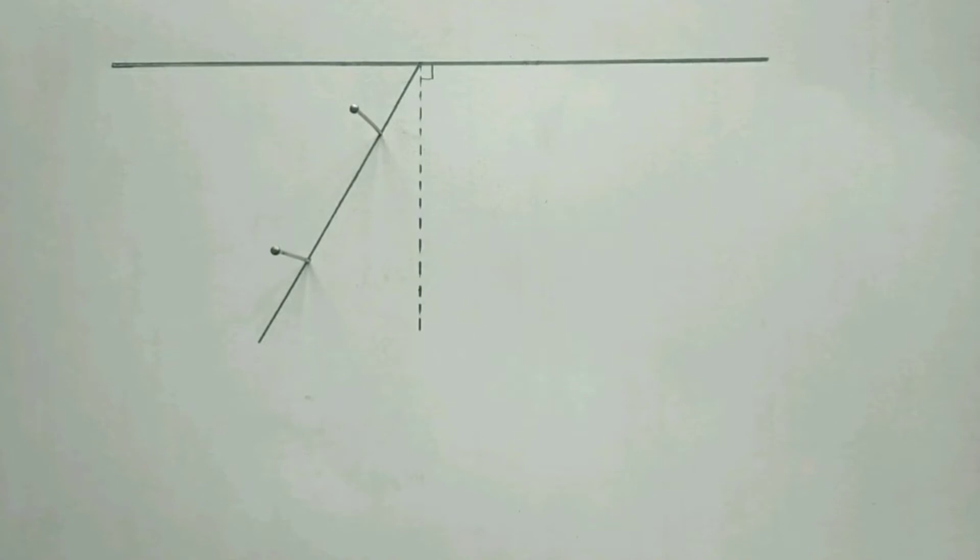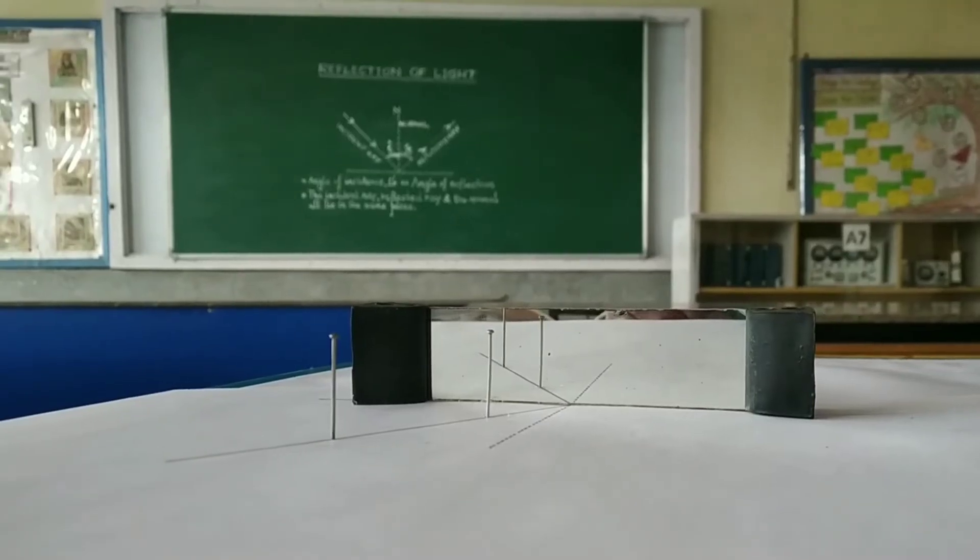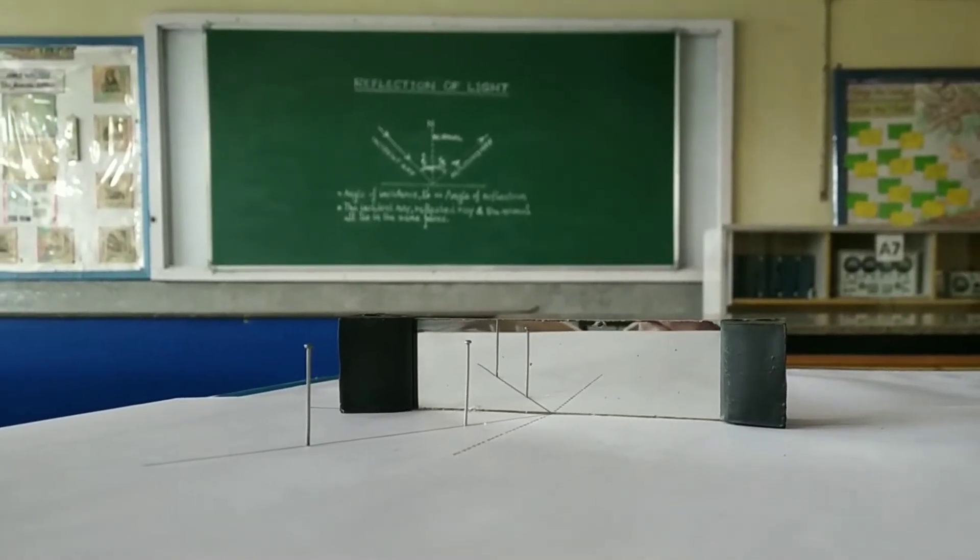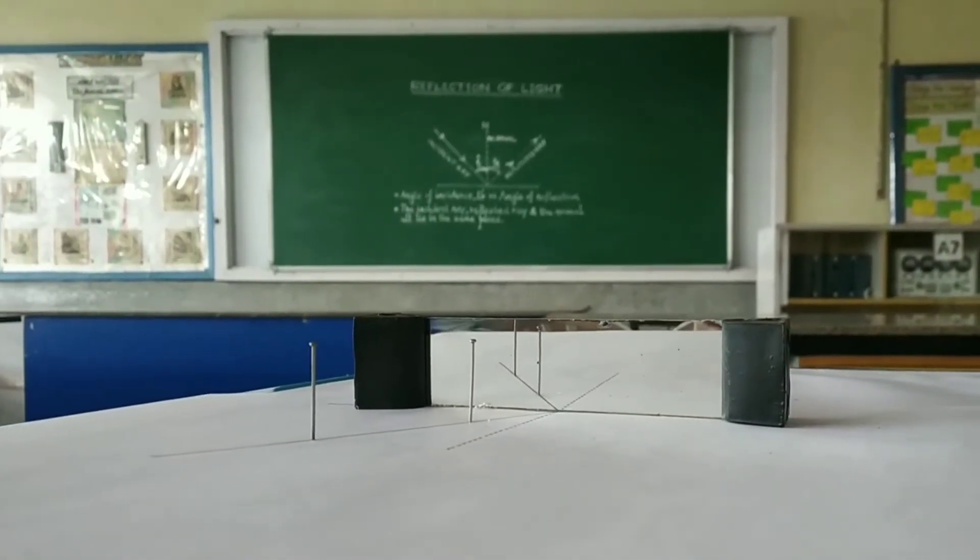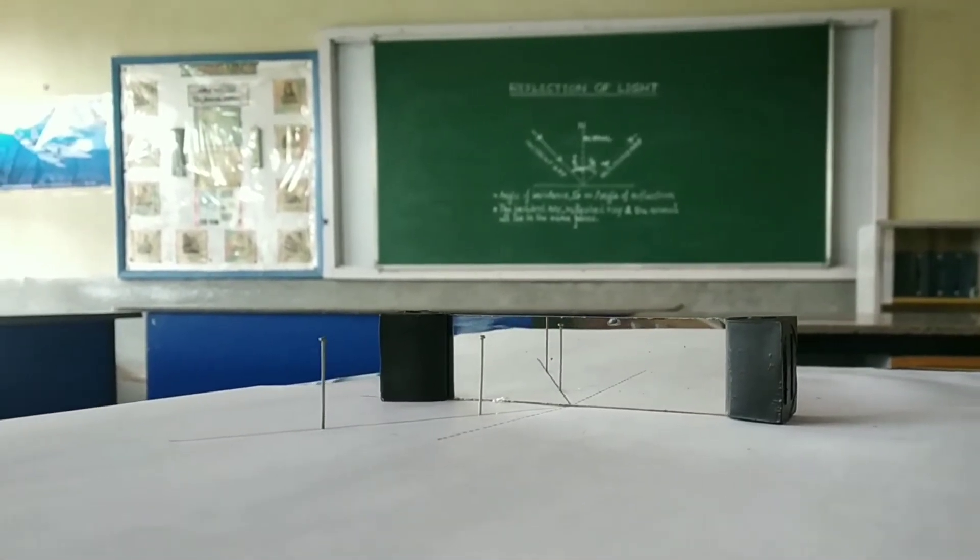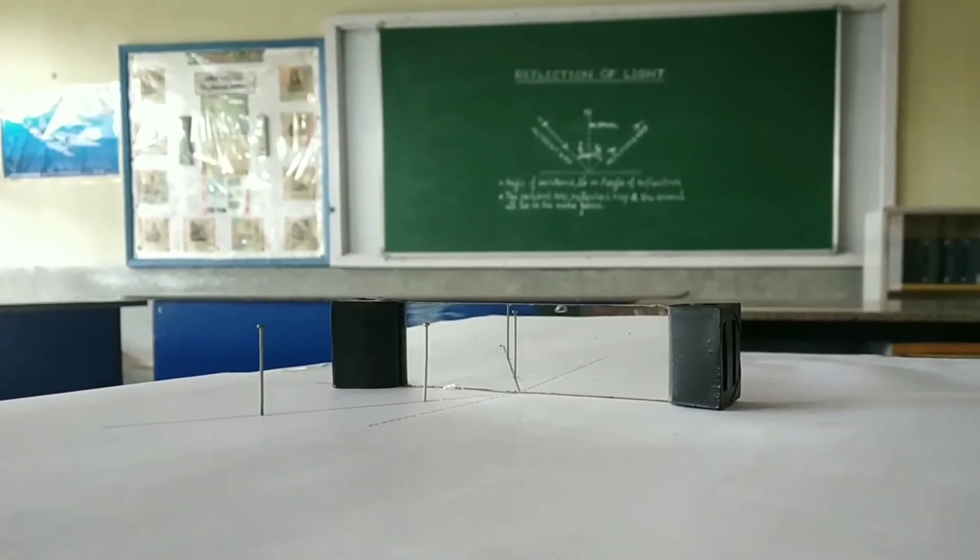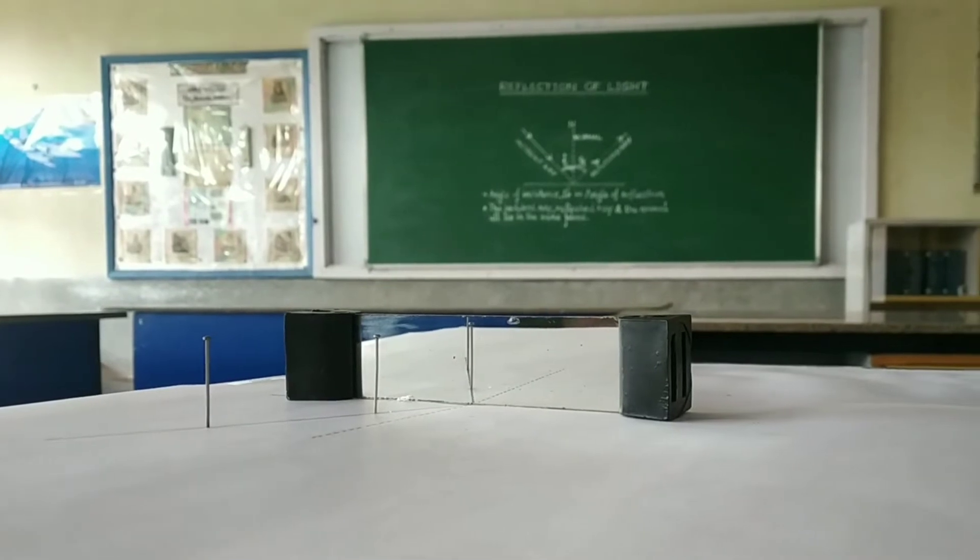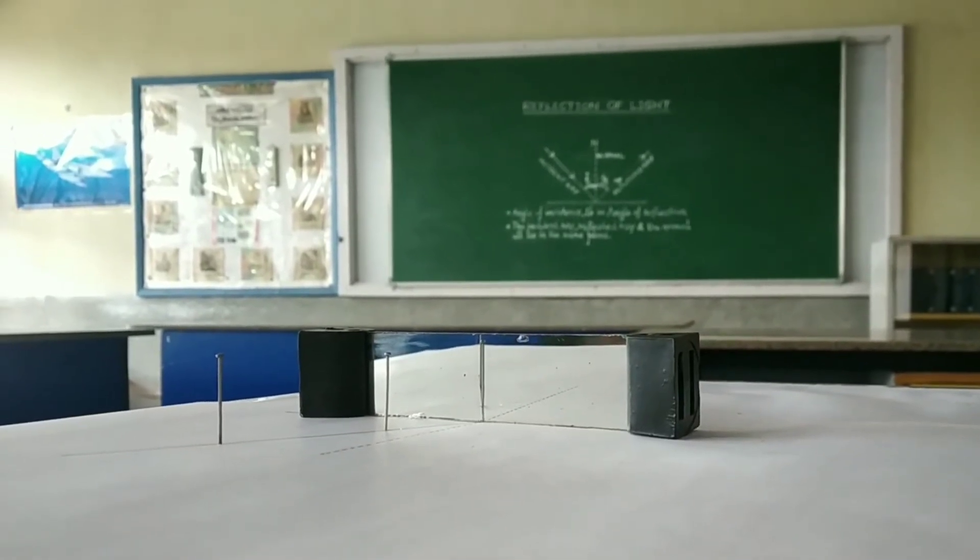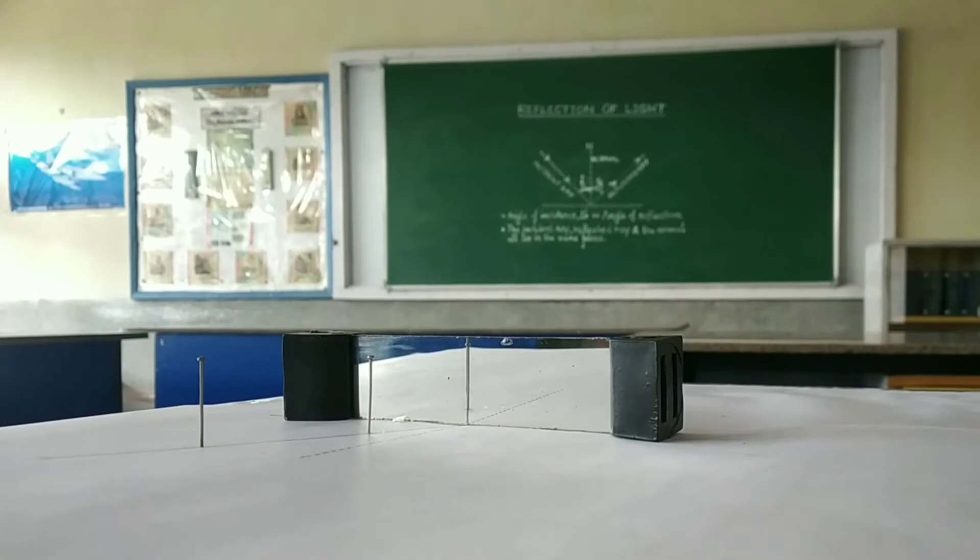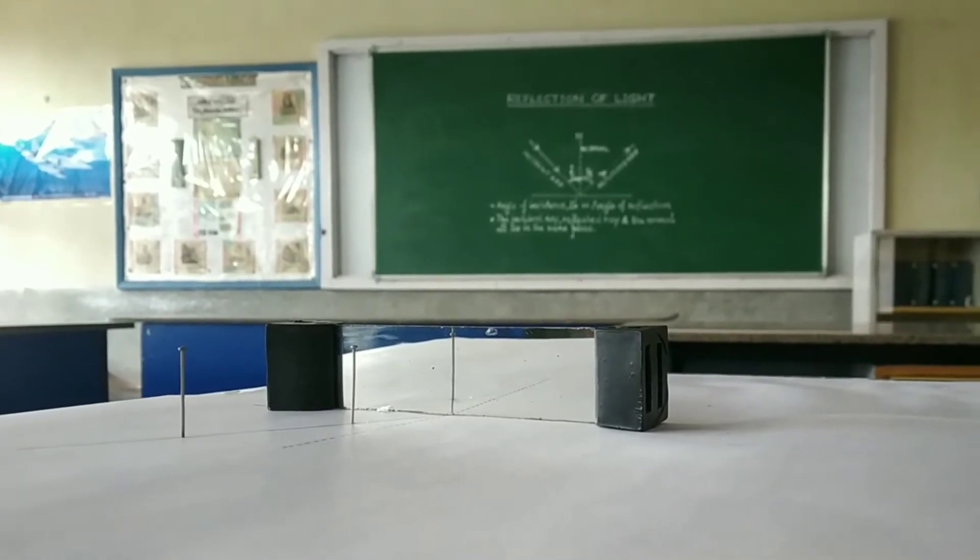After that students, we need to place the plane mirror and then look for the images of the two pins which we have fixed on the incident ray. Here students, you can see the virtual images of the two pins which are fixed on the incident ray. The image is as far behind the mirror as the object is in front of it and also the size of the image is same as that of the object.